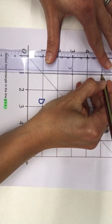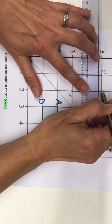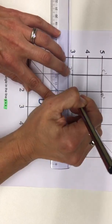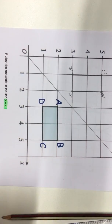Then I just need to draw in my lines to form my rectangle on the other side of the mirror line. And that is the end of the question.